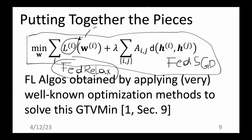You have to make design choices — you have to explain what you use as local loss functions and local models, which define the objective function. For example, the average squared error over all data points in the local dataset is one choice for the local loss function. But this already involves two design choices: using the squared error loss and using linear hypothesis maps. The important thing in the report is to explicitly mention all these design choices.